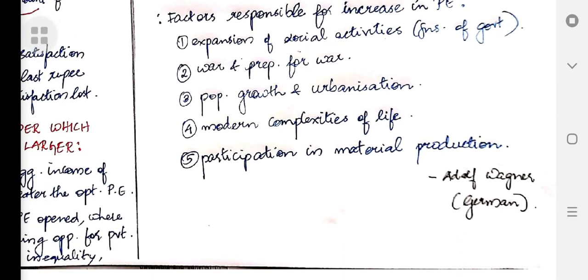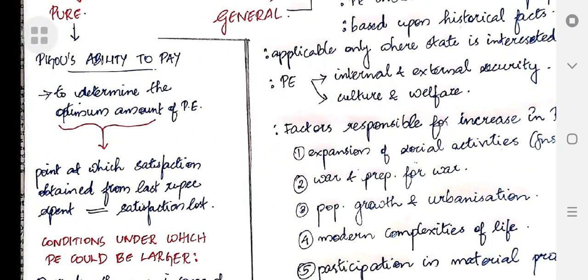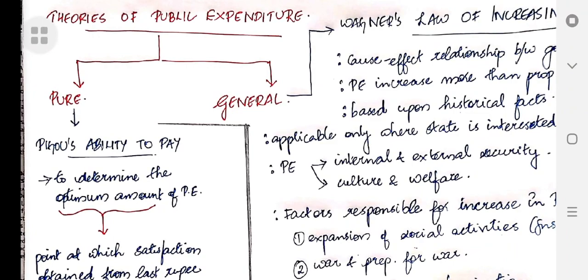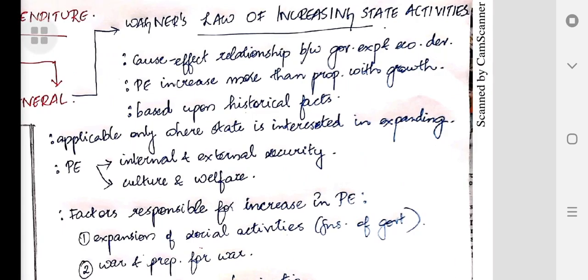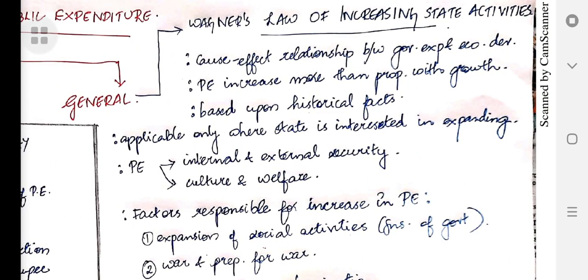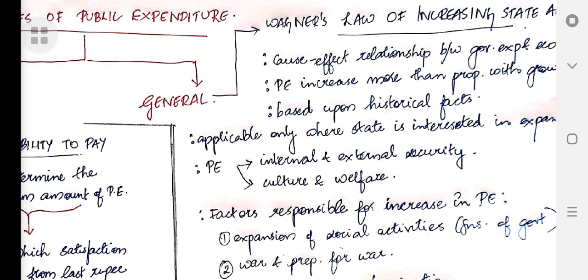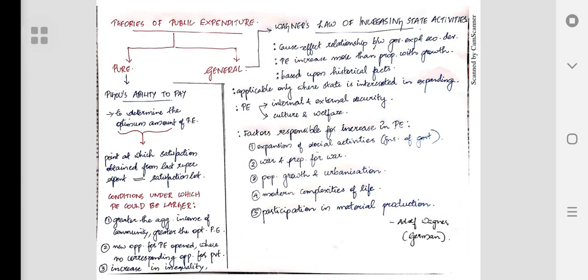So that's it for today. We looked at Pigou's ability to pay theory, which comes under pure theory of public expenditure, and Wagner's law of increasing state activities, which comes under general theory of public expenditure. In future videos, we will look at other theories of public expenditure. Thank you.